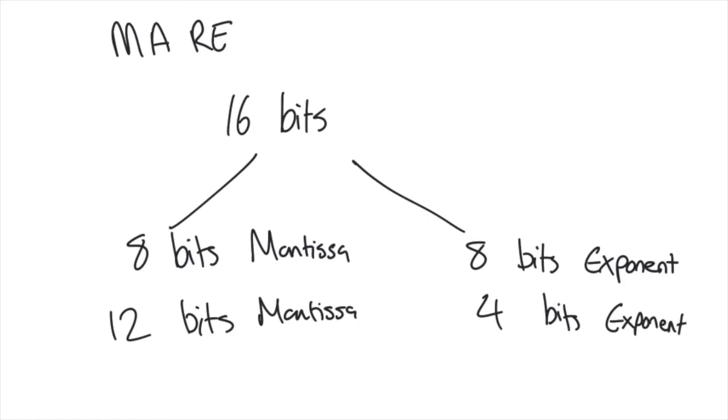You can see here that the number of bits has gone up in the second example for the mantissa, so this means that the accuracy has increased.